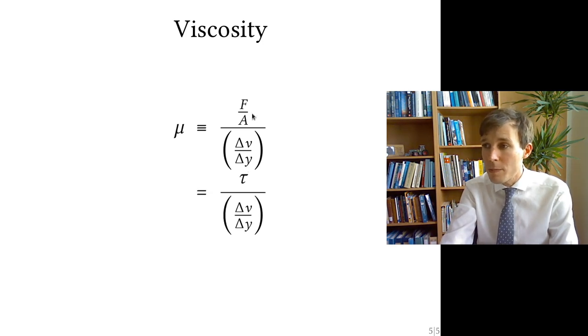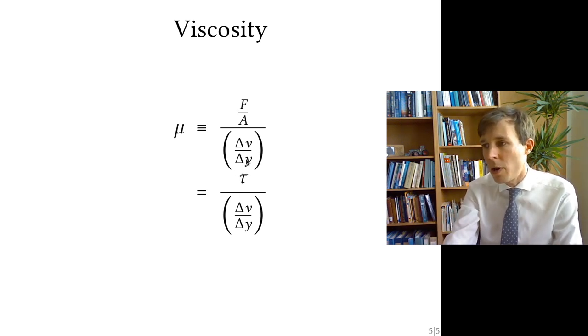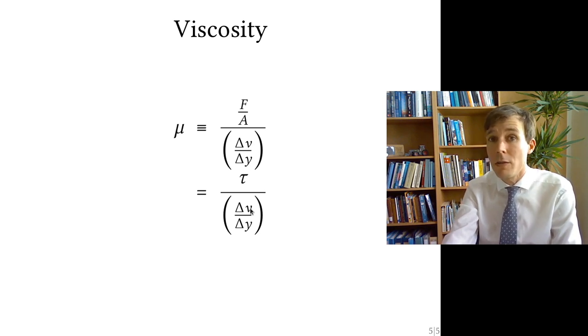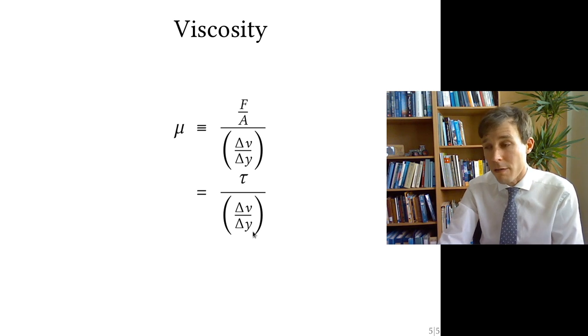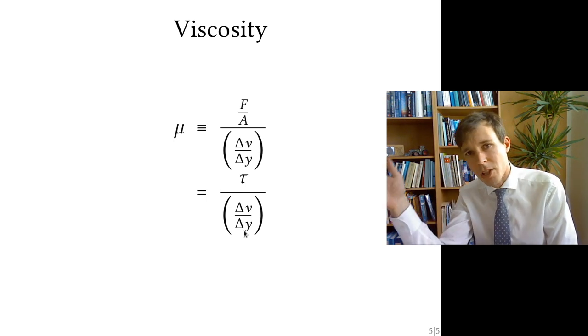And so the force by area here on top, we write it tau. We call it shear stress. We'll come back to this in the coming chapters. And the bottom term we call velocity gradient, the change in space of velocity, delta v over delta y. We will learn to write this a tiny bit more formally in the coming chapters. For now, that should be enough.